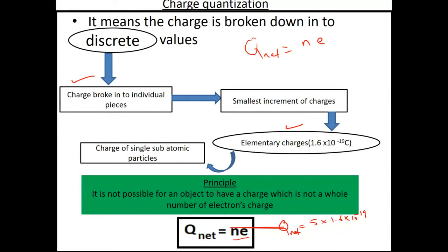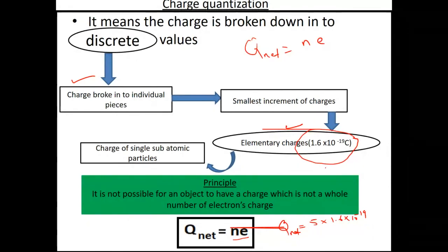For example: you have one charge, you break it into five pieces — you have five small pieces. What is the value of one piece? It is 1.6 × 10⁻¹⁹ coulombs. To calculate the net charge, use Q = n × e, where e = 1.6 × 10⁻¹⁹ coulombs.